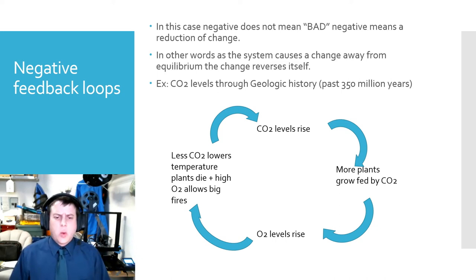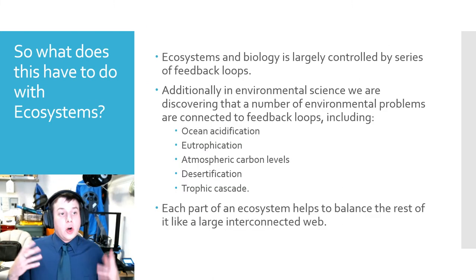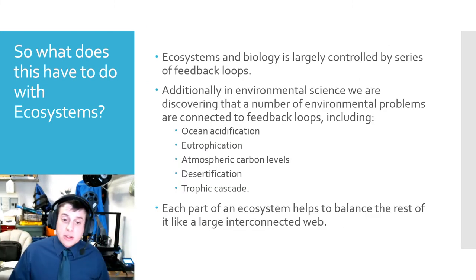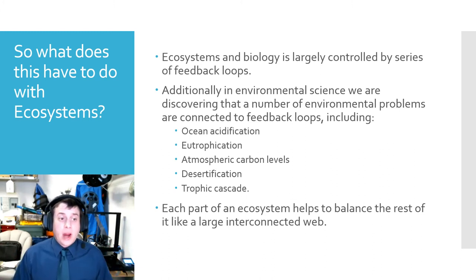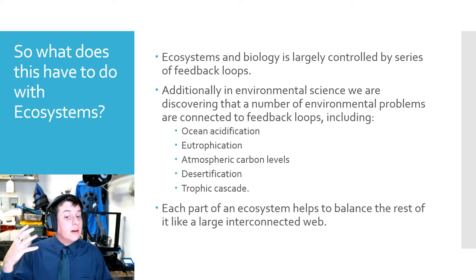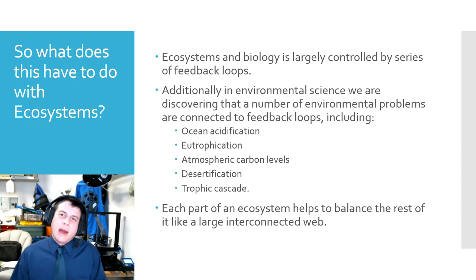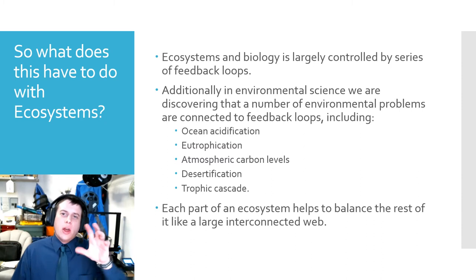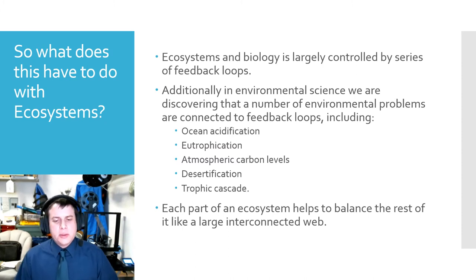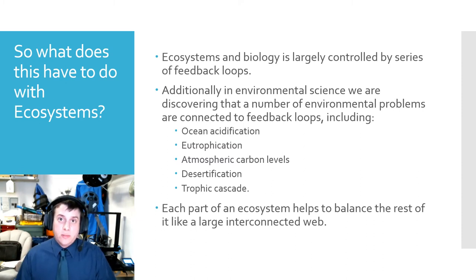So why are these feedback loops important? In environmental science, we can see that ecosystems, biology, and a lot of natural systems are actually controlled by a series of feedback loops. These can include how ecosystems change and go back to equilibrium, but it also includes things in biology like how bodies maintain homeostasis — for example, how your body controls blood sugar. In environmental science in particular, we are discovering that a number of environmental problems are actually connected to feedback loops.